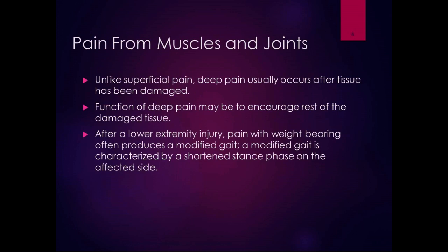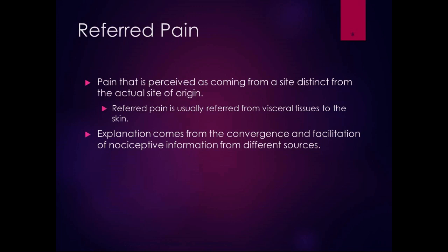Unlike superficial pain, deep pain usually occurs after tissue damage. The biological function of deep pain may be to encourage you to rest the damaged tissue. For example, after a lower extremity injury like a twisted ankle, pain with weight bearing produces a modified gait characterized by a shortened stance phase on the affected side — we call that an antalgic gait. 'Ant' means against, 'algia' means pain, so it's a pain-avoiding gait, caused by pain with weight bearing to encourage rest of the damaged tissues.